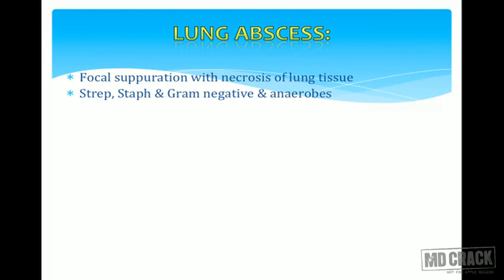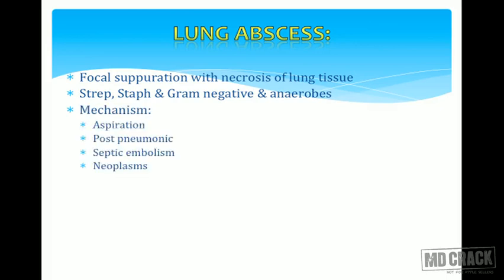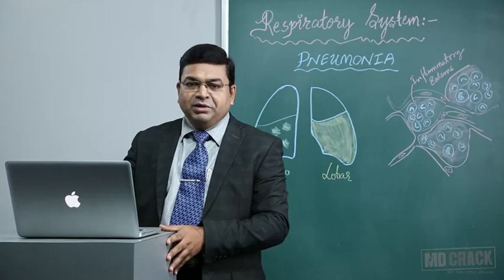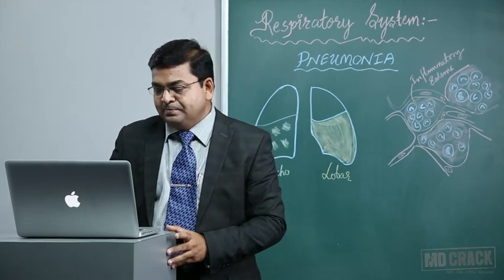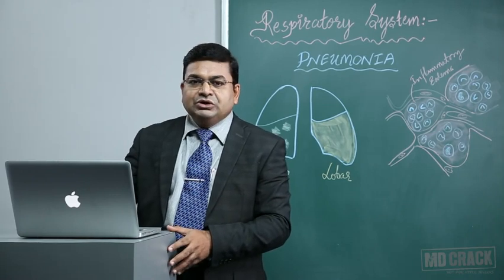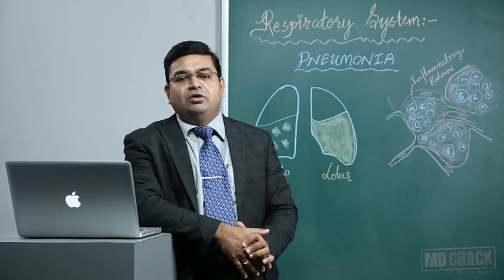Untreated cases will show formation of a lung abscess, with focal suppuration and total necrosis of the lung tissue. Causative agents include Streptococcal pneumoniae, Staph, gram-negatives, and anaerobes. Formation of lung abscess could be due to aspiration — aspiration pneumonia if not treated can lead to lung abscesses — post-pneumonia cases, septic embolism, or obstructive neoplasms. The patient will have productive cough, high-grade fever, and clubbing of the fingers, which is very classical of lung abscesses. Complications include systemic spread, acting like septic emboli, and septicemia.